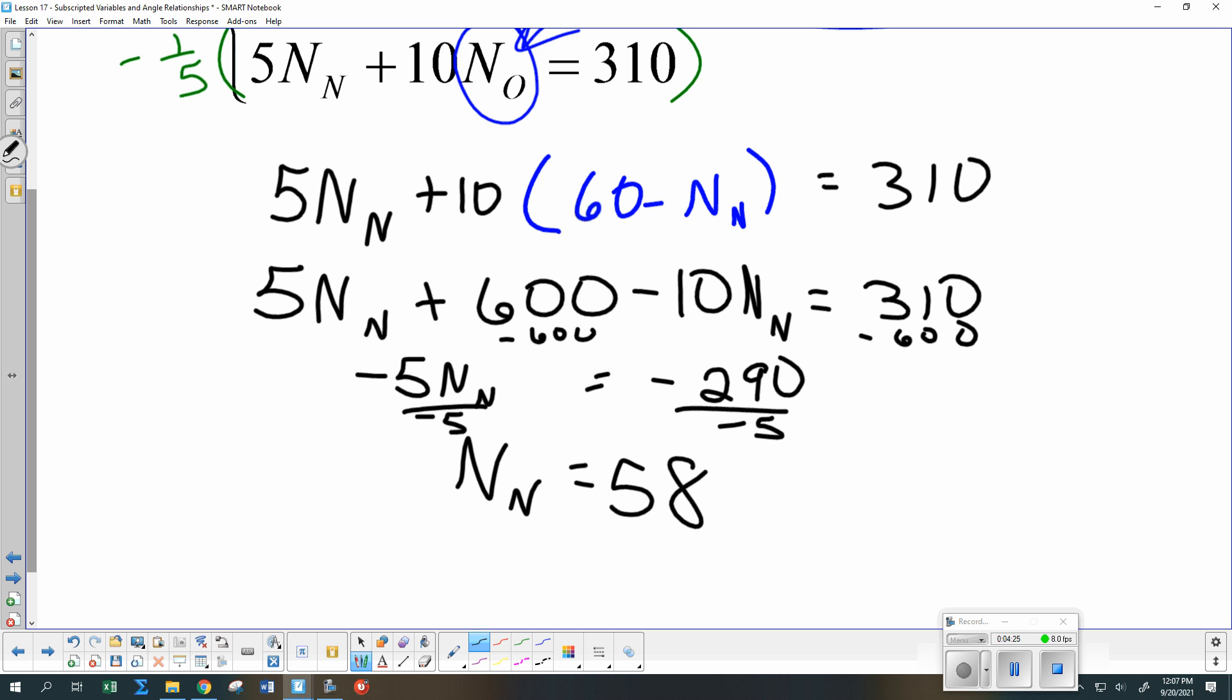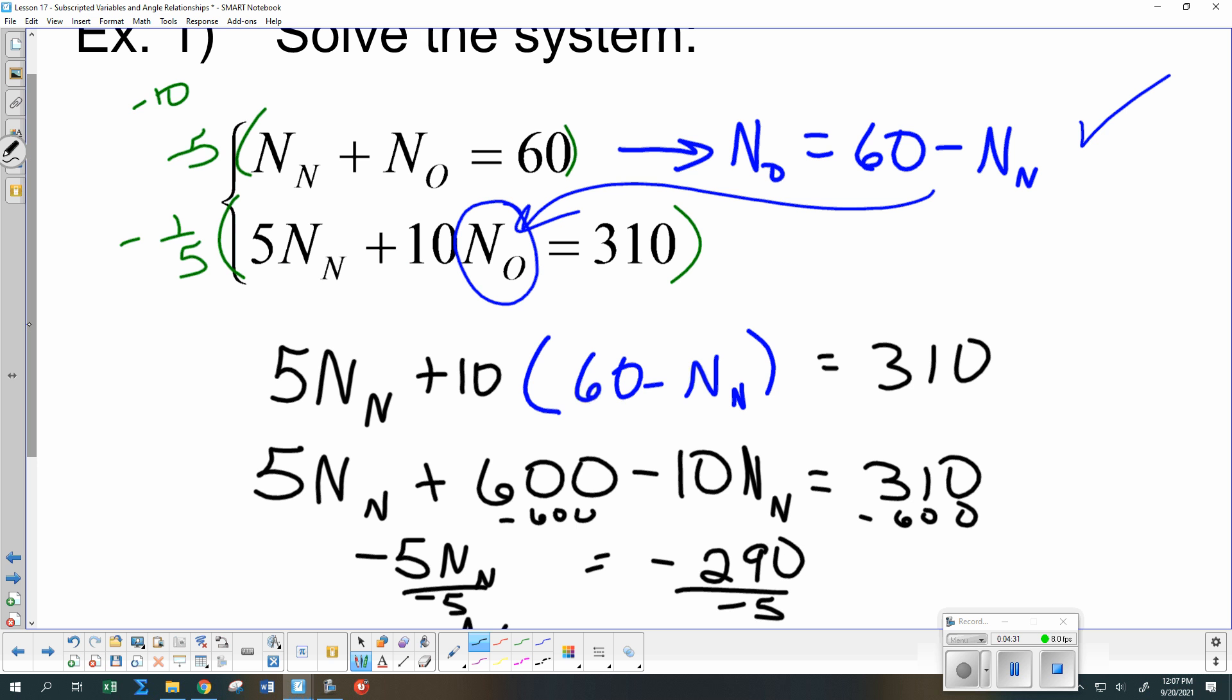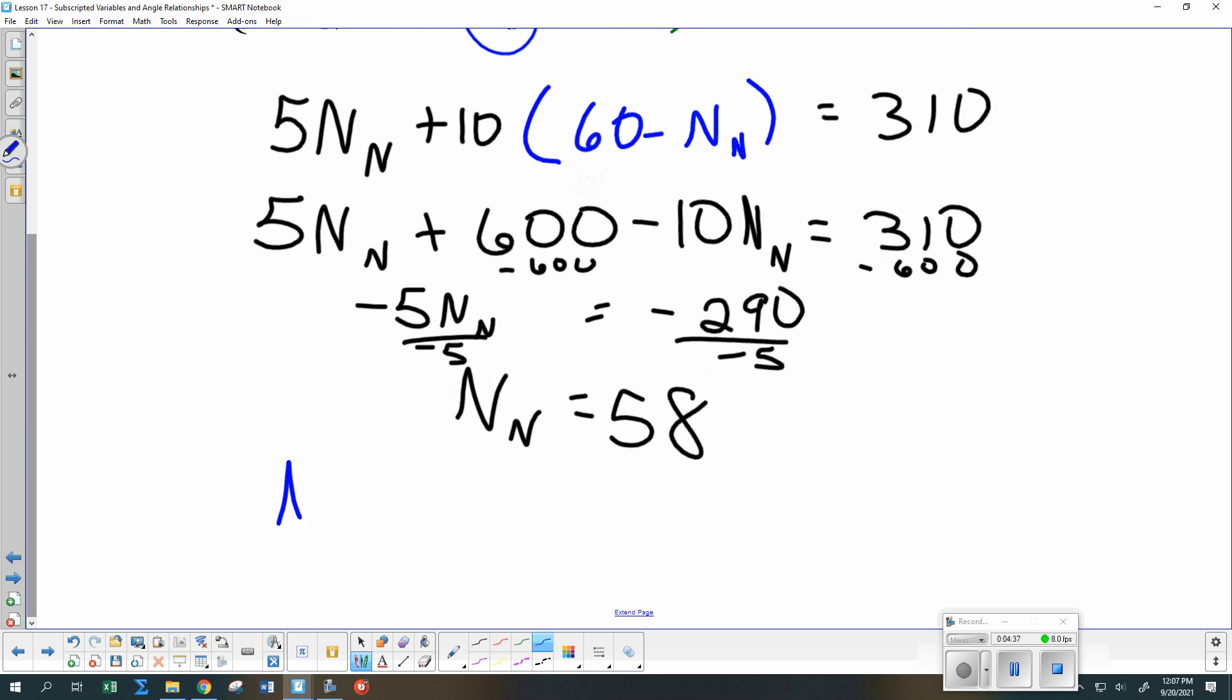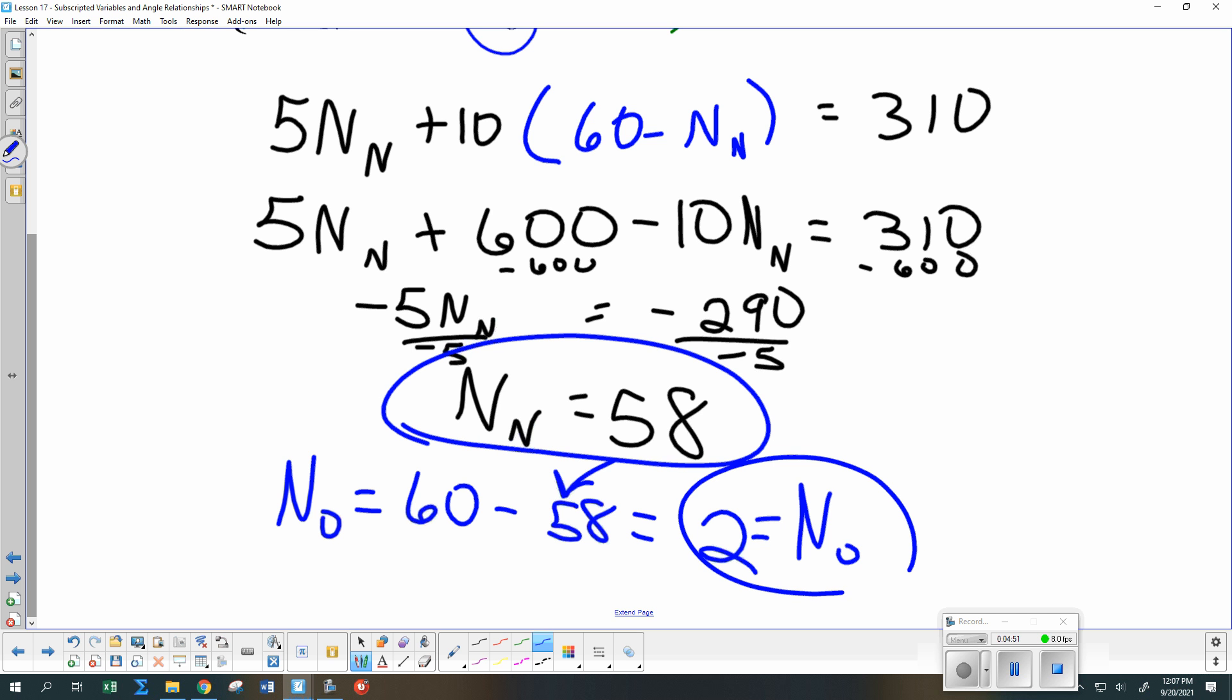What do I still need to do Daniel? I still need to find the other variable. So I'm going to come back up here and I said that my NO was 60 minus NN. So NO is 60 minus my NN. So NO is 2. They are not XY so I do not write them as an ordered pair. I simply circle what my answers are. Questions for that?